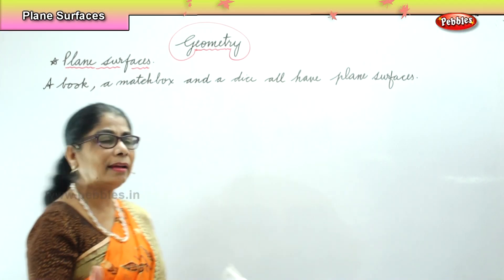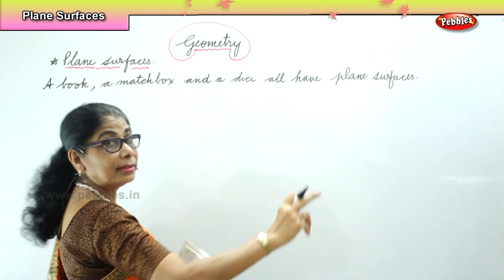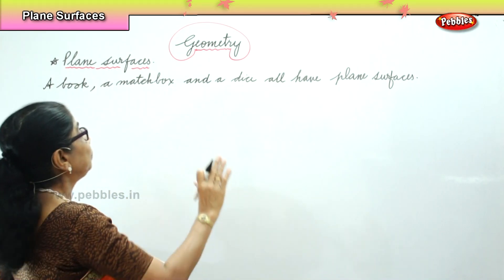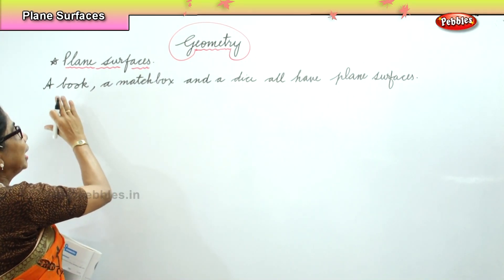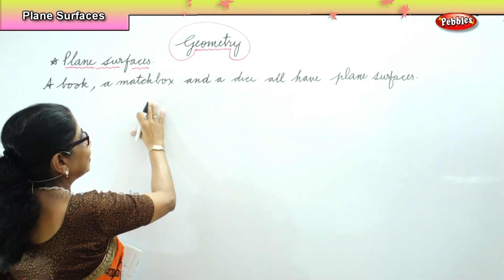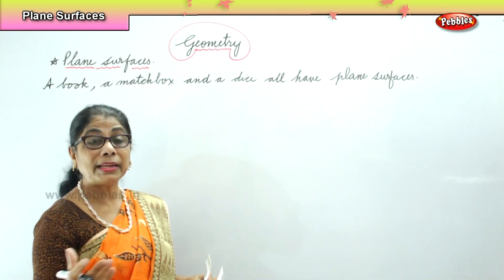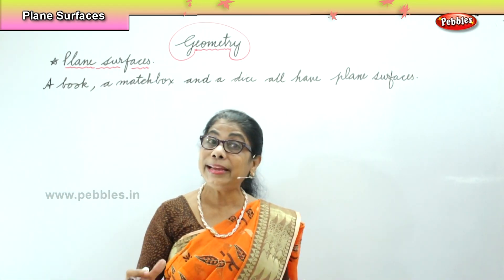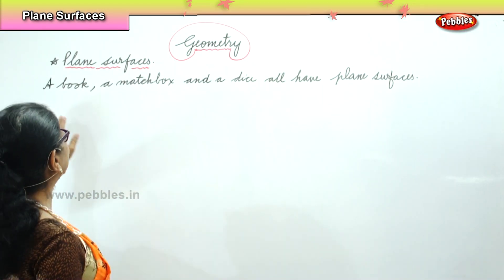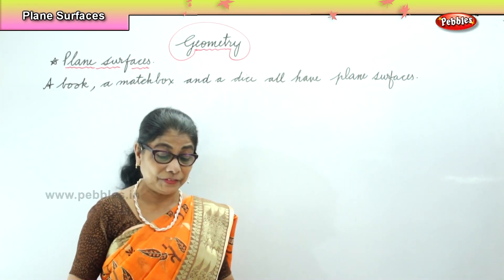If it's a book, it's a square or rectangular shape. A matchbox can be square or rectangular shape. A dice is always a square shape. So a book can be square or rectangle, a matchbox can be square or rectangle, a dice is always a square, and party caps — cones — are always a triangle. A book, a matchbox, and a dice all have plane surfaces.